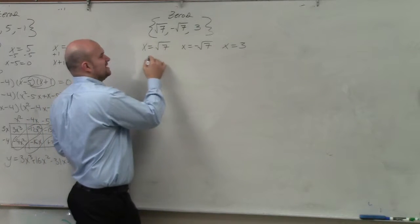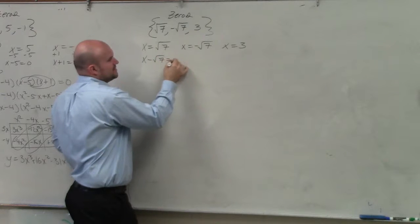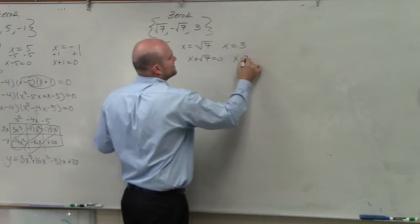That's why it comes in here, and I'll come up to that again. So if I solve these equal to x, I get x minus square root of 7 equals 0, x plus the square root of 7 equals 0, and x minus 3 equals 0.